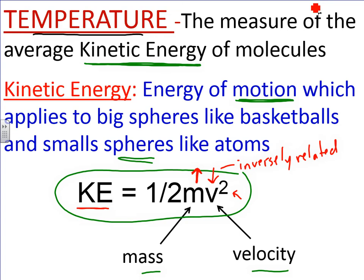Vice versa: if you have a lighter particle, the mass goes down. So if you have a helium particle, helium has a really, really low mass, so its velocity will be very, very high. Later on, we'll use this equation to actually determine the molar masses of gases, which is really neat — we can determine the molar mass just by using this equation successfully.